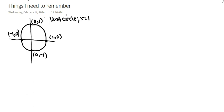I'm gonna label this in radians. So this is 0 radians, pi over 2 radians, pi radians, 3 pi over 2 radians, and as I complete my trip around the circle, 2 pi radians. For any angle theta drawn in here with an x value and a y value, the x value always represents the cosine of theta and the y value represents the sine of theta. So there's the quick rehash on the unit circle.